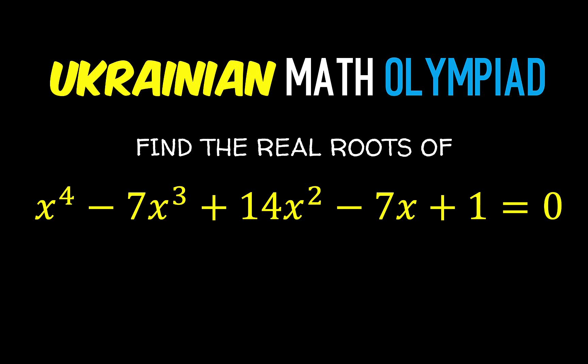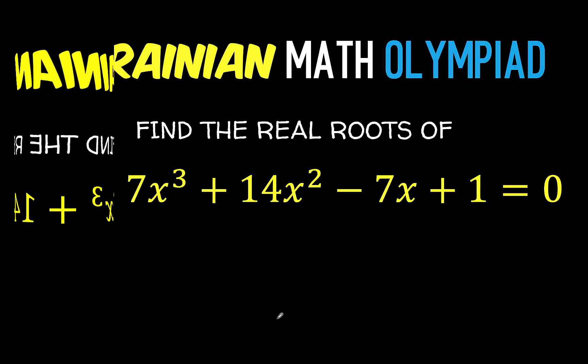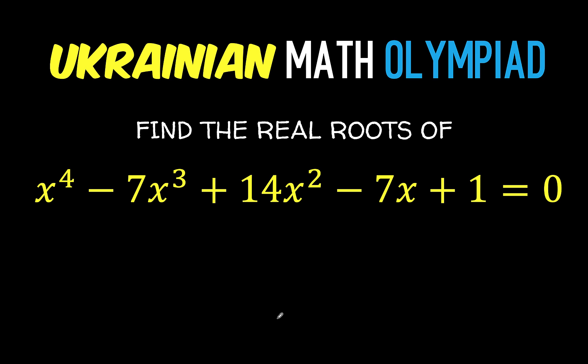Hey everyone, here is our math problem for today. This is a problem given in the Ukrainian Math Olympiad. We are asked here to find the real roots of this polynomial equation: x to the fourth minus 7x cubed plus 14x squared minus 7x plus 1 equals 0.